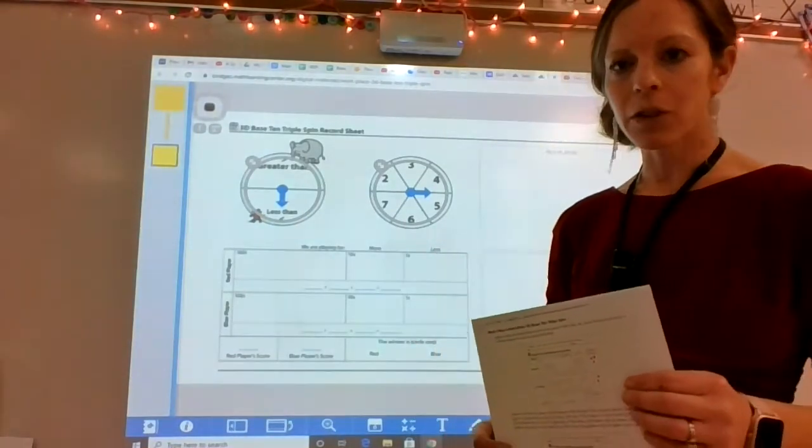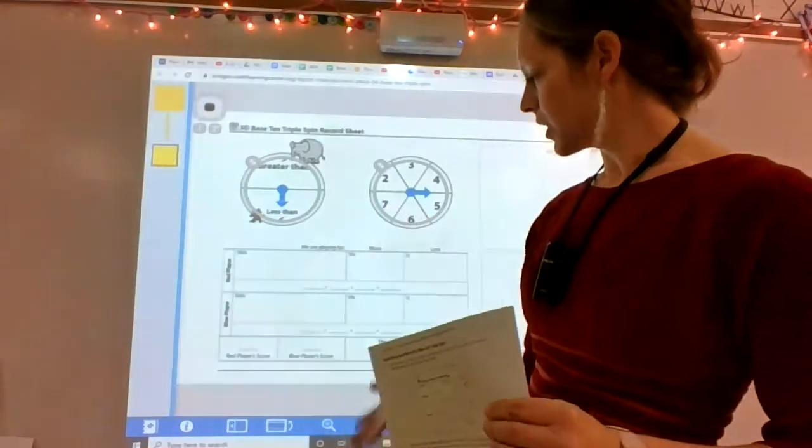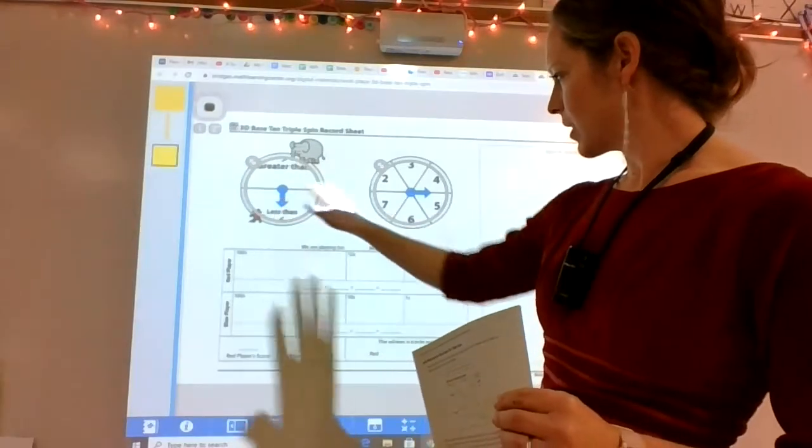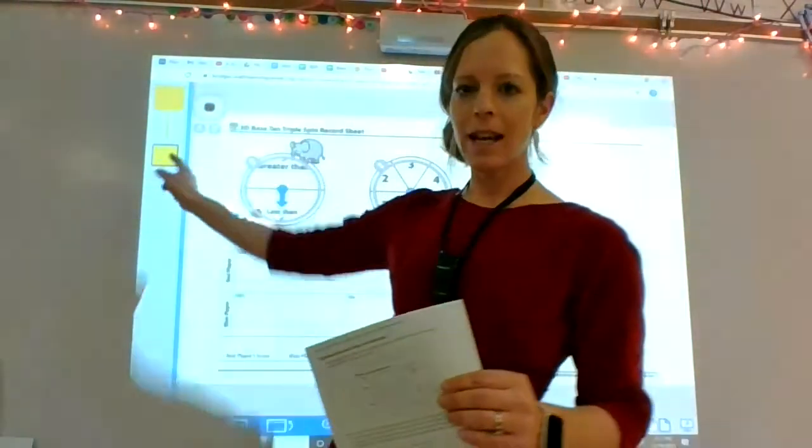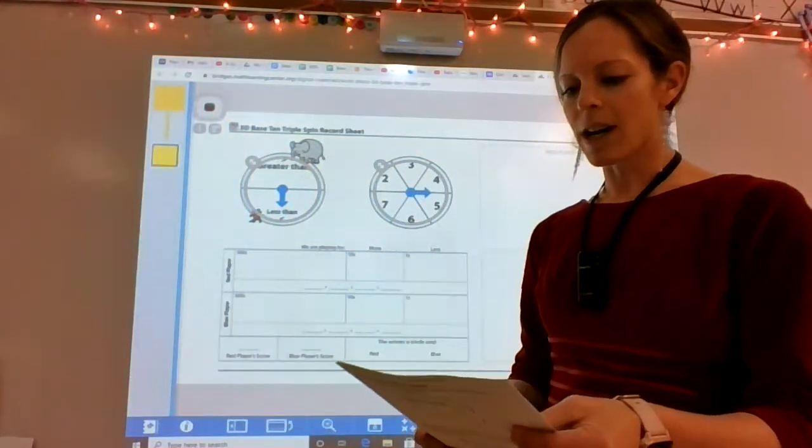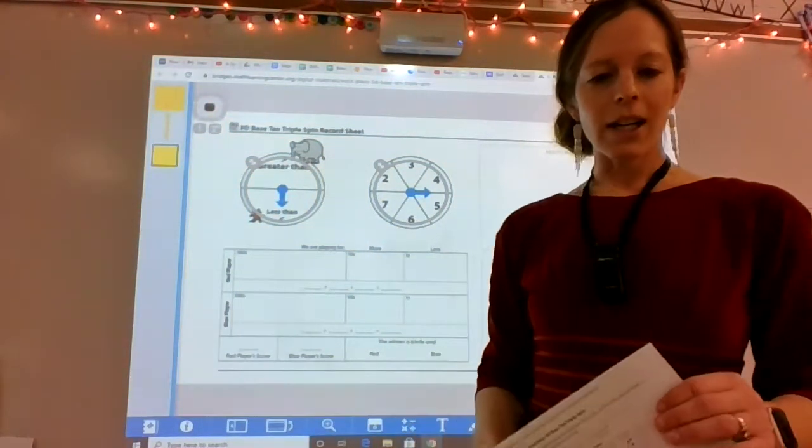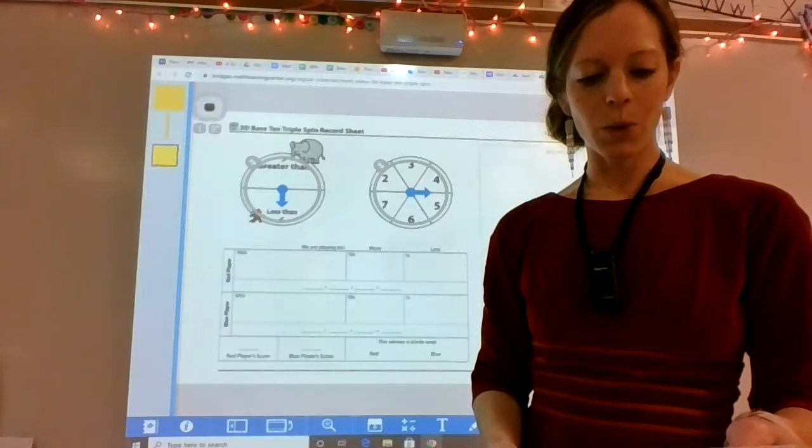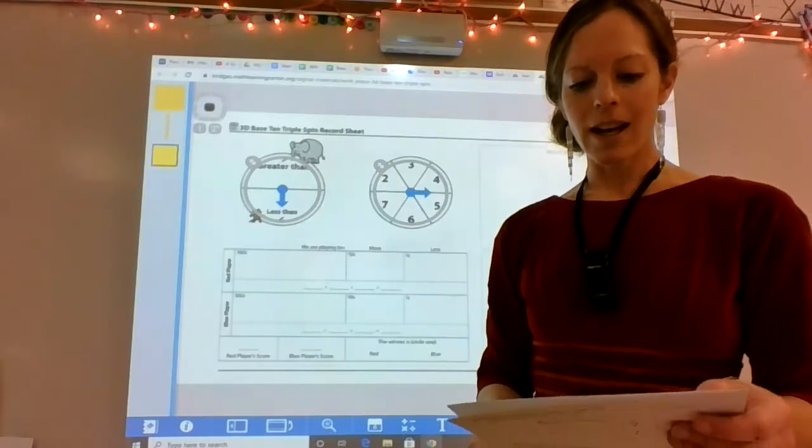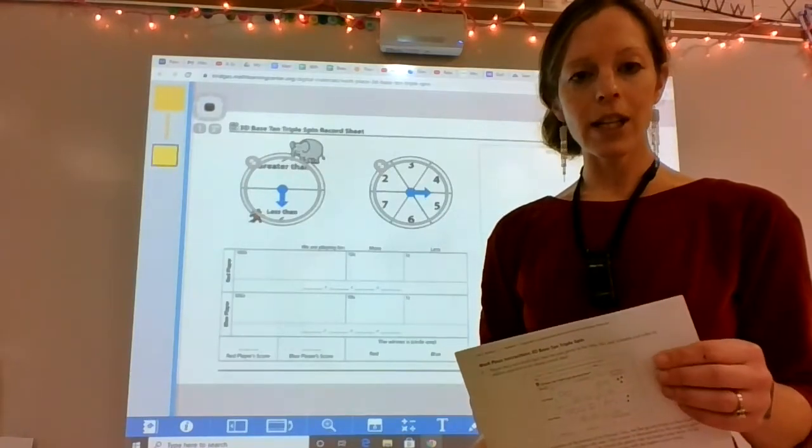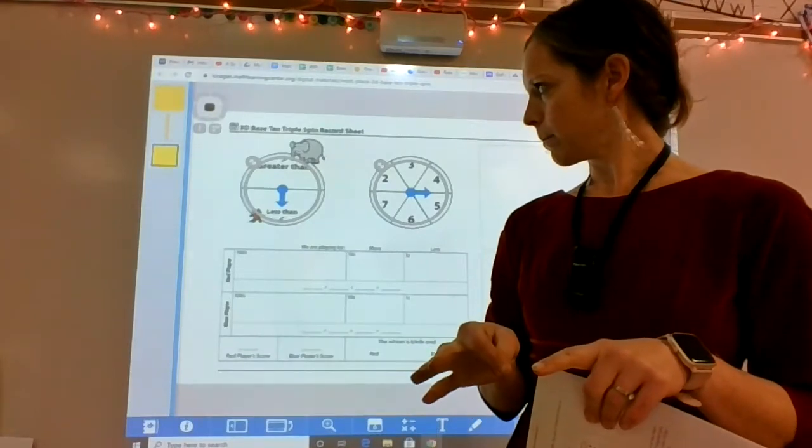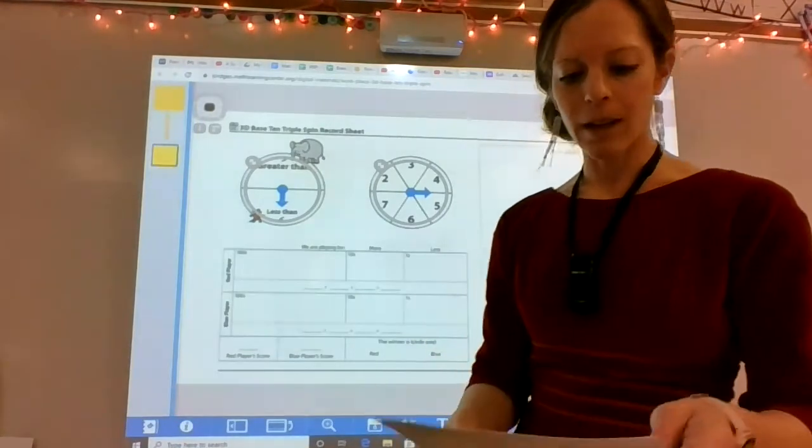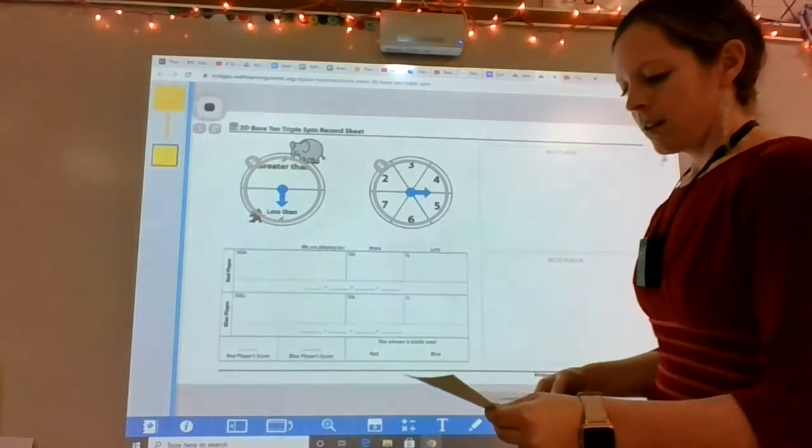And if you are playing virtually all your materials are right here. Here are your spinners, here is your second spinner, and here are your base 10 pieces, the hundreds, tens, and ones. If you are in class, you need a pencil and your record sheets to record on and possibly a paper clip to spin. Alright, here is how we go. Here is how you play.